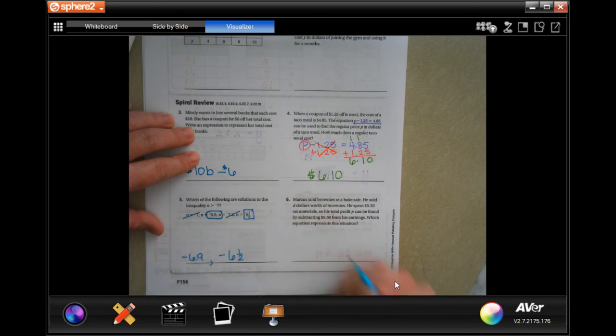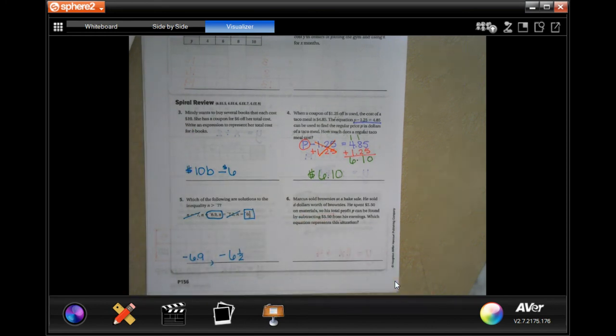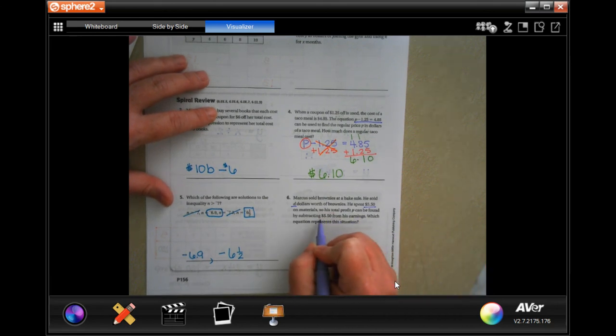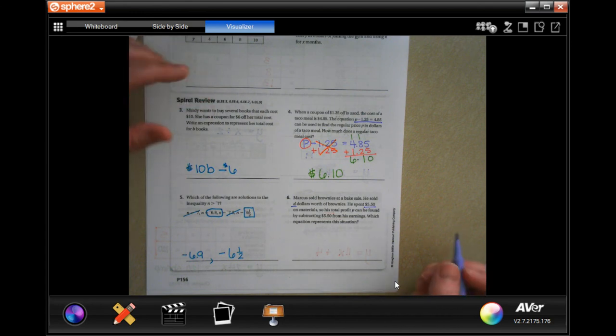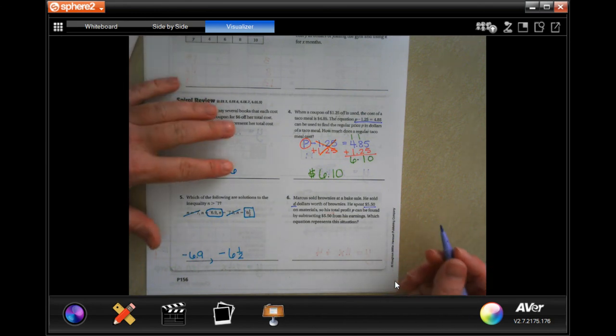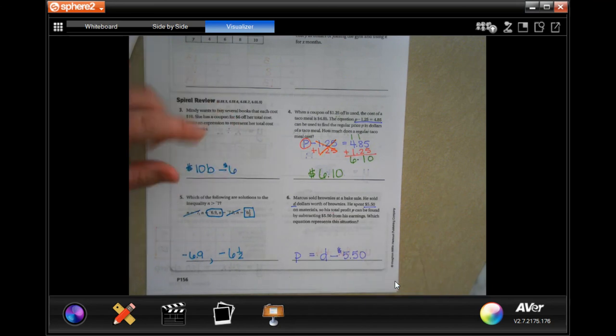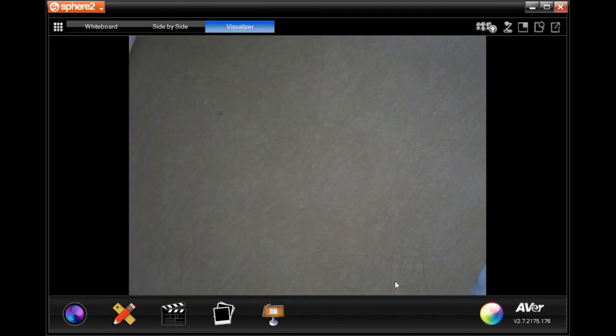Marcus sold brownies at a bake sale. He sold d dollars worth of brownies. He spent five dollars and fifty cents on materials so his total profit can be found by subtracting five dollars and fifty cents from his earnings. Which equation represents this situation? All right so his profit is however many dollars he sold worth of brownies minus the five dollars and fifty cents he used to make the brownies. All right now thanks for hanging out for nine point two, come on back for nine point three.